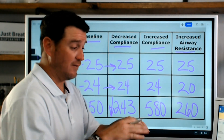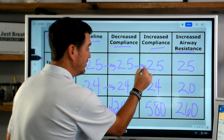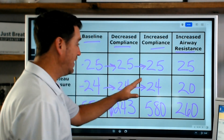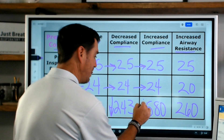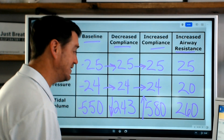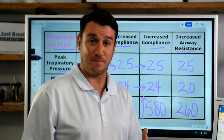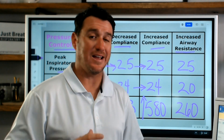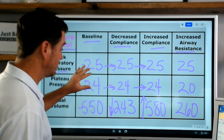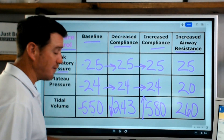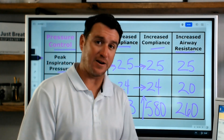Then we took the rubber bands off the test lung and increased compliance. Pressure didn't change - PIP stayed at 25, plateau stayed at 24. But look at our tidal volumes - they actually increased, going up from baseline a little bit. You have to understand what compliance does in pressure control. We're seeing there's no change in our pressures, but there are changes in our volumes. That's the definition of pressure control: set pressure, varying volumes.